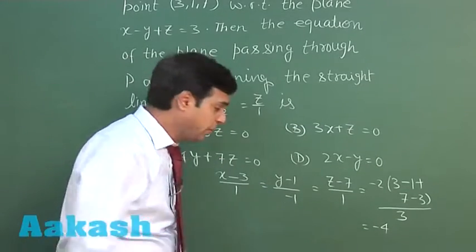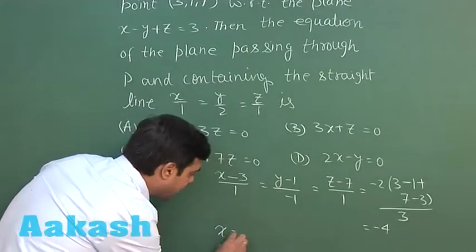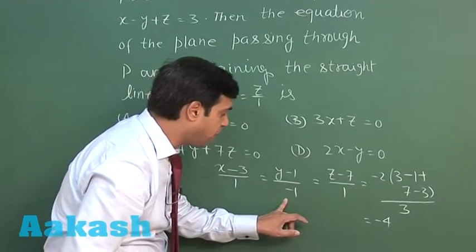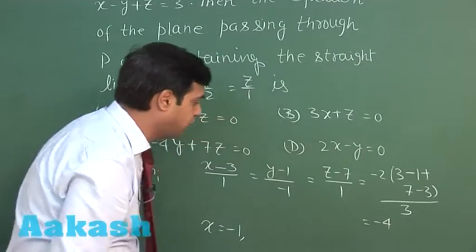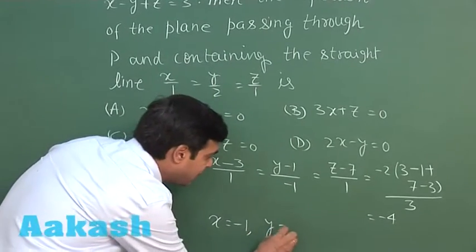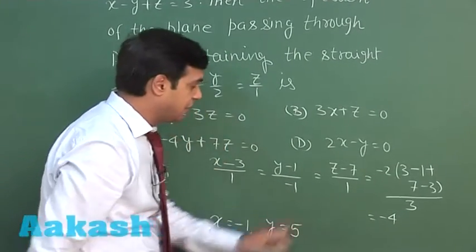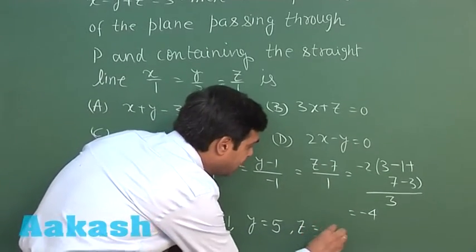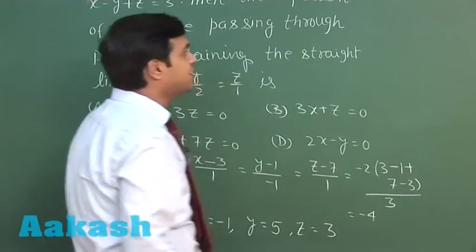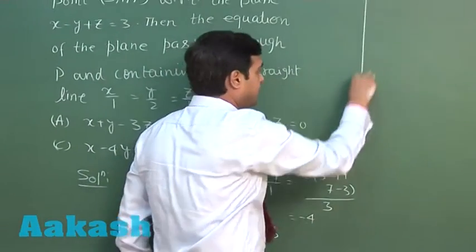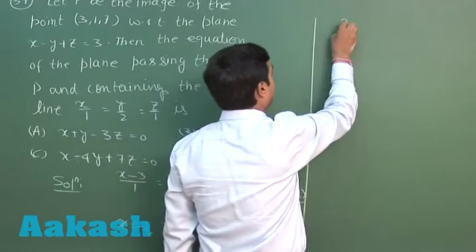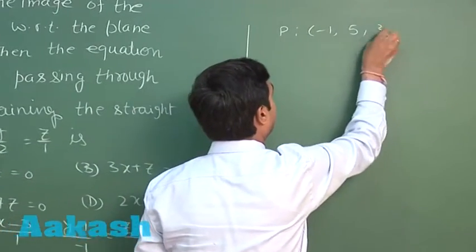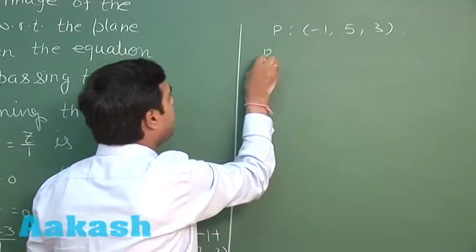So x minus 3 equals minus 4, giving x equals minus 1. Then (y minus 1)/(minus 1) equals minus 4, giving y equals 5. And z minus 7 equals minus 4, giving z equals 3. Hence the image point P is obtained as (minus 1, 5, 3).